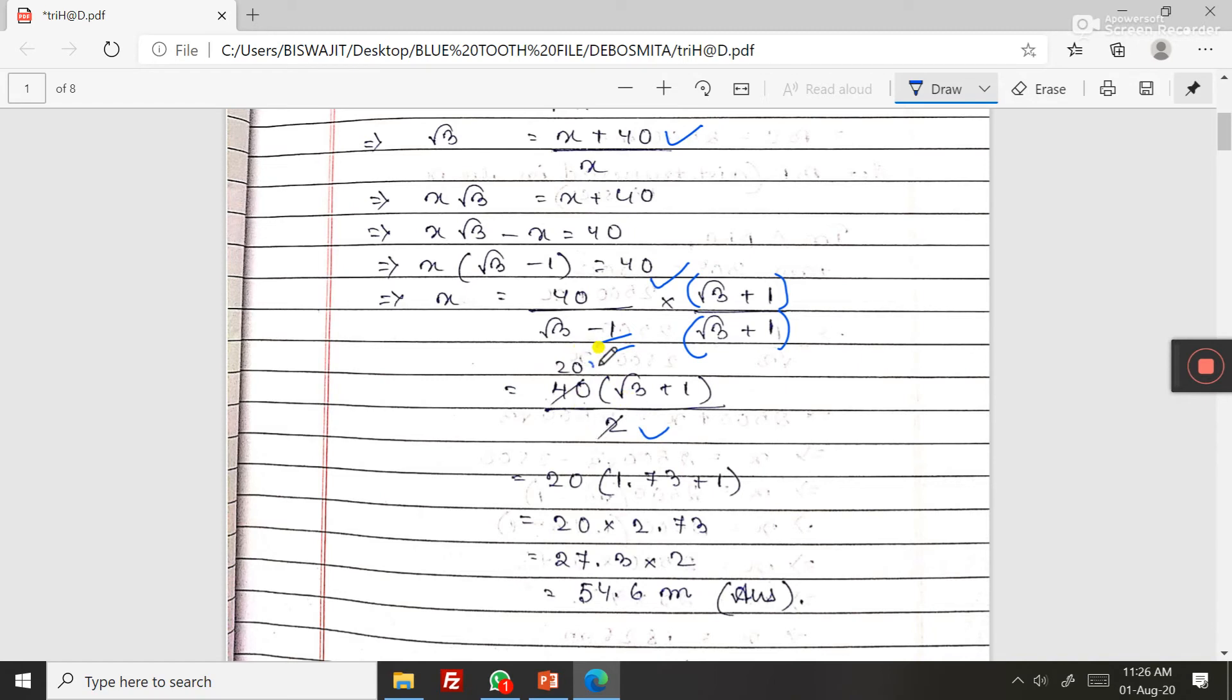So if you cut, this is 20. So 20, root 3 value is 1.73 plus 1, that is 2.73. If you multiply, this is 54.6.